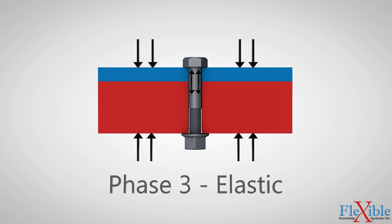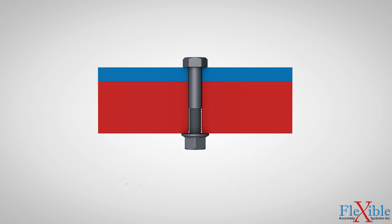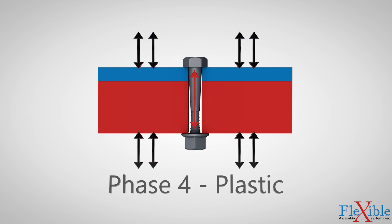Phase 3 is elastic deformation and clamp load build up. Clamp load, also called preload, is created when torque is applied and is the primary goal when tightening. Phase 4 is plastic deformation. This is where we hit our yield strength and the fastener begins to deform permanently.